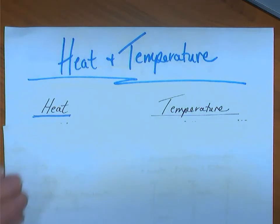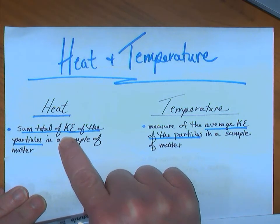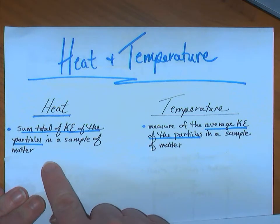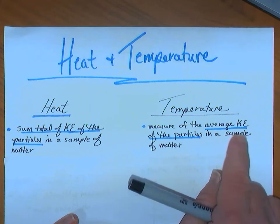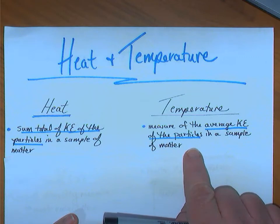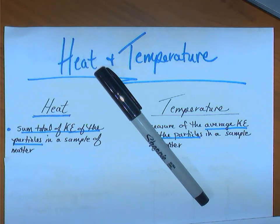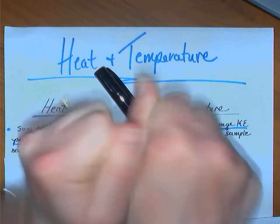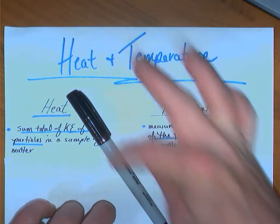Okay, the basic definitions. Heat is the sum total of the kinetic energy. Remember, kinetic energy is the energy of motion. The sum total of the kinetic energy of the particles in the sample of matter. Where temperature is a measure of the average kinetic energy of the particles in the sample of matter. If I'm talking about the heat of the solid particles that are within the Sharpie marker, I would be adding up the energy of motion that every particle that is vibrating and rotating in place is exhibiting. Where temperature, I would take an average of that.